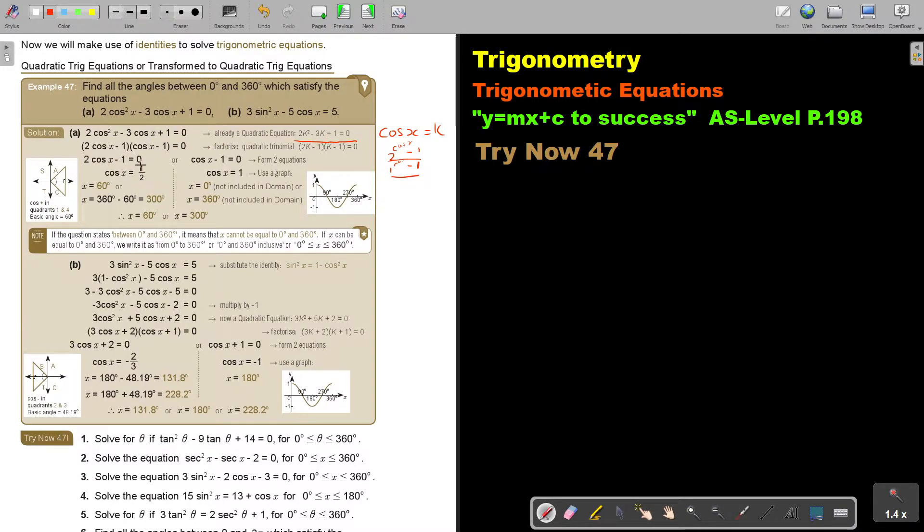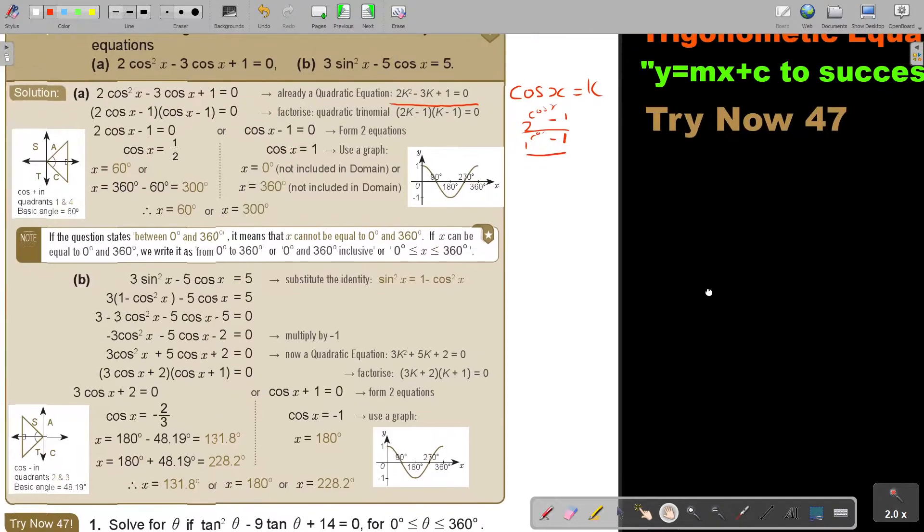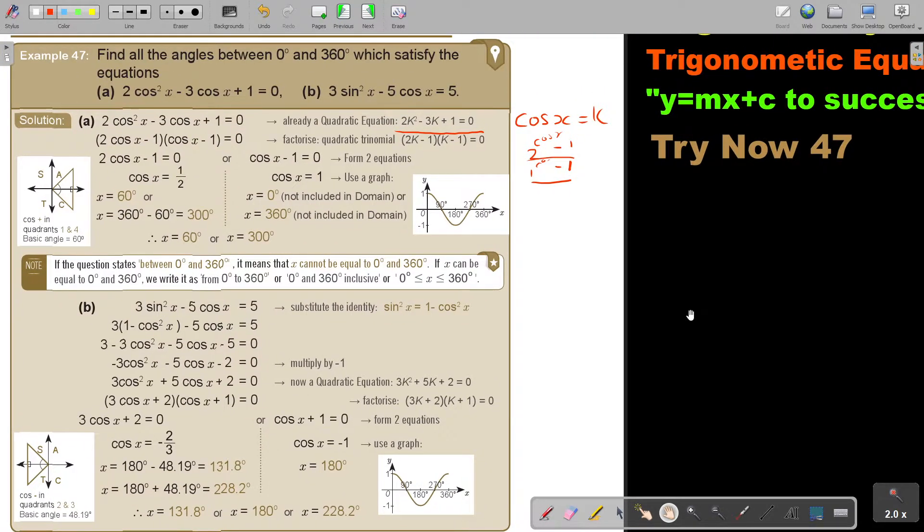Now, this one is very nice. It's a half. Where is cos positive? It's in quadrant 1 and 4. Find your basic angle, that's 60. So, it's 60 or 360 minus. So that's my 2 angles.